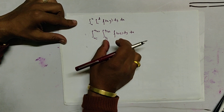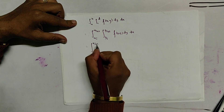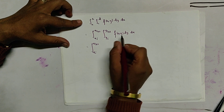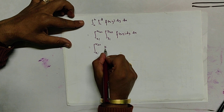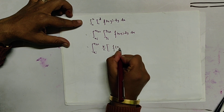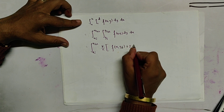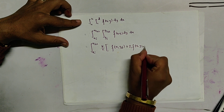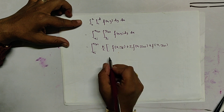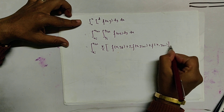First, we apply the trapezoidal rule for the inner integration, while the outer integration remains over x_i to x_{i+2}. We use k as the step size in y and h as the step size in x. The trapezoidal rule formula applied to the inner integral gives k/2 times [f(y₀) + 2f(y₁) + f(y₂)].